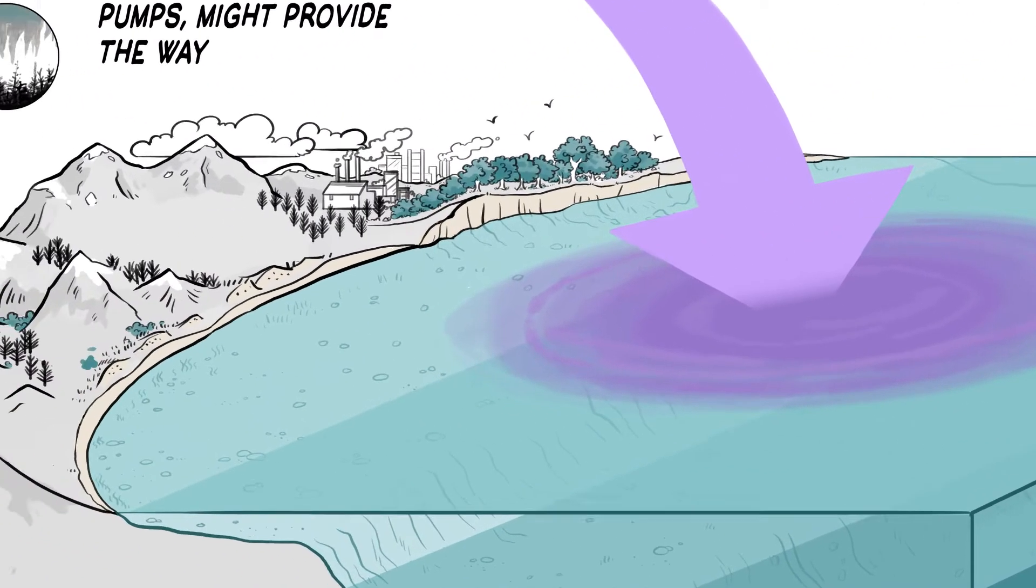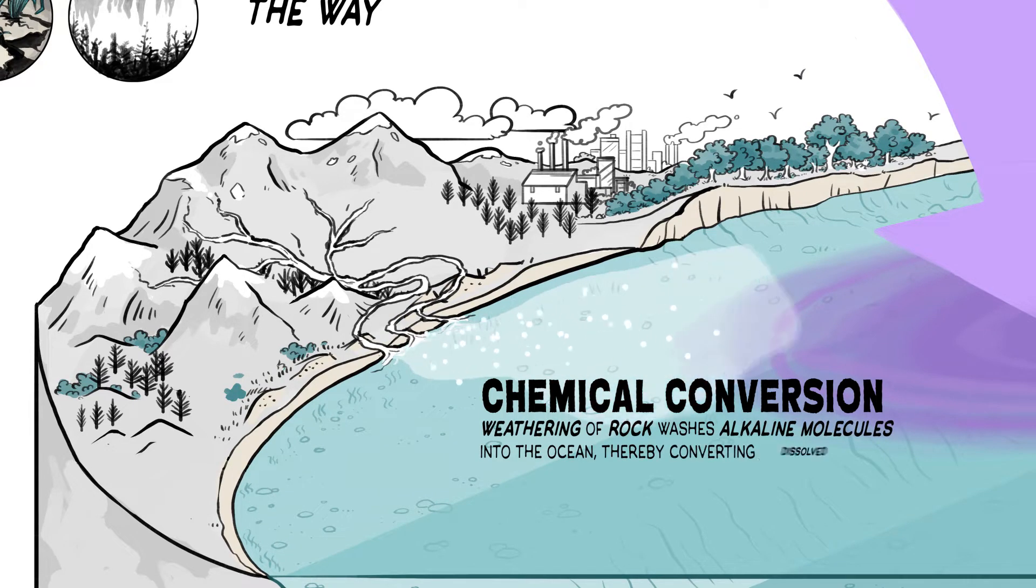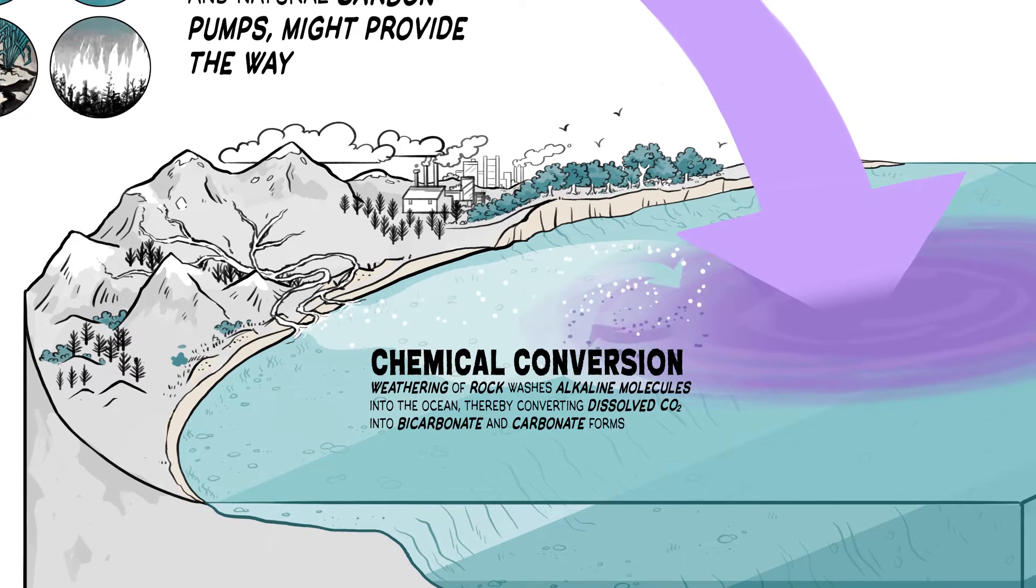Over geologic timescales, weathering of rock washes alkaline molecules into the ocean, thereby converting dissolved CO2 into bicarbonate and carbonate forms. This natural alkalinity allows the ocean to take up more CO2 without further increasing ocean acidity.